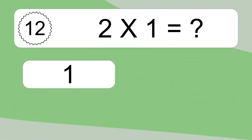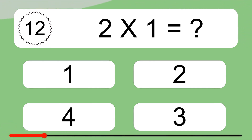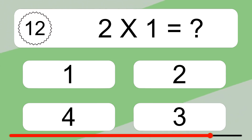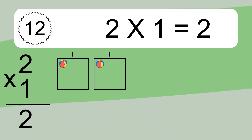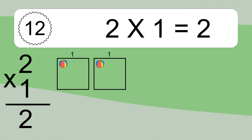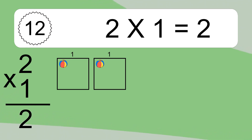2 times 1 equals what? 2 times 1 equals 2. We have two boxes and each box has one colorful ball inside. If you count all the balls in all the boxes together, you will have two times one balls. This equals two balls.